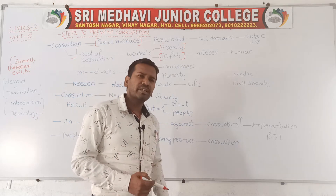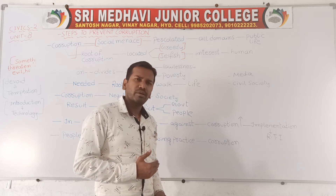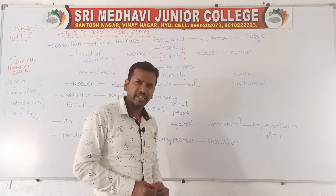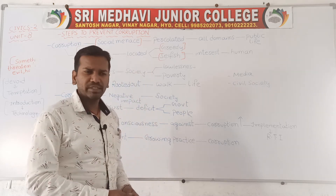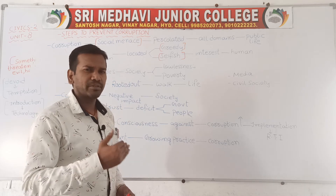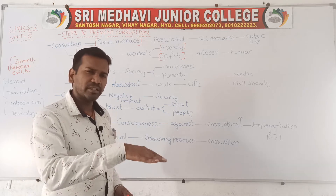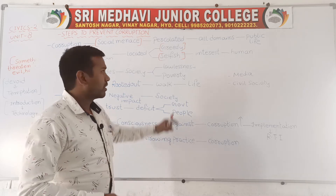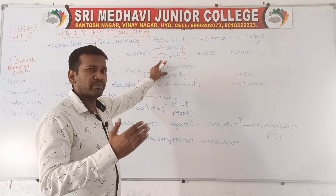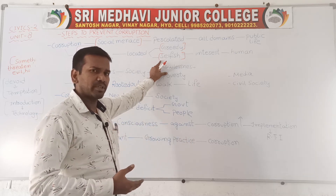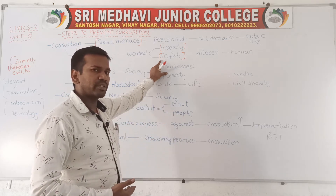Why corruption divides into lawlessness and poverty we have explained. Even though the government formulated the Prevention of Corruption Act 1988, corruption is still widely practiced. Whenever corruption propagates it affects the administrative system, because corrupt officers will bend the rules and regulations by taking money, making society completely lawless for those who have money and are willing to pay bribes.